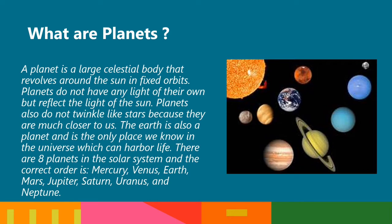There are eight planets in the solar system and the correct order is: Mercury, Venus, Earth, Mars, Jupiter, Saturn, Uranus, and Neptune.